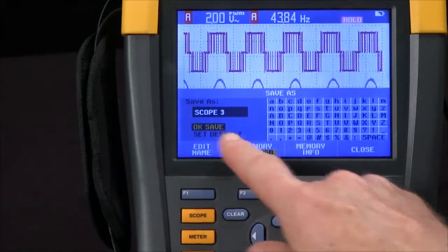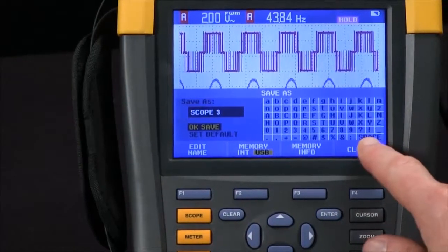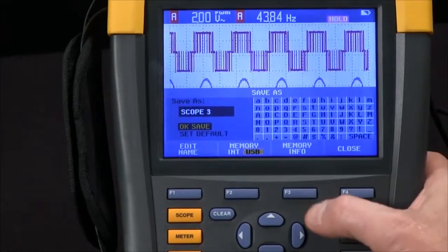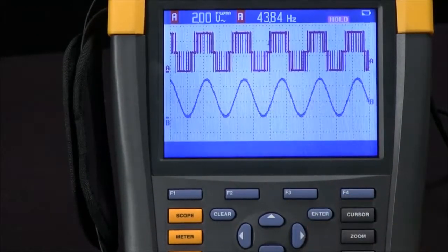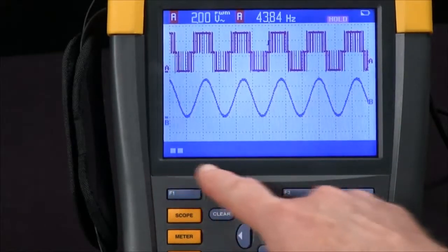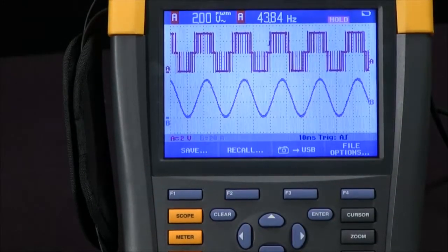We can create a name if we want to using the alphanumeric keypad over here, or just save as scope 3. I'll hit the Enter key for that. Now we're saving that data to my jump drive.